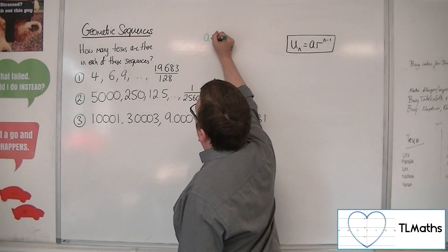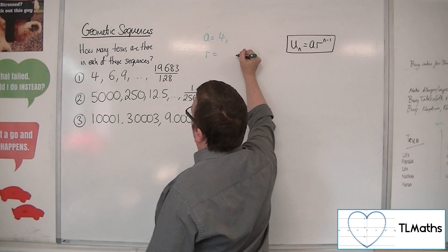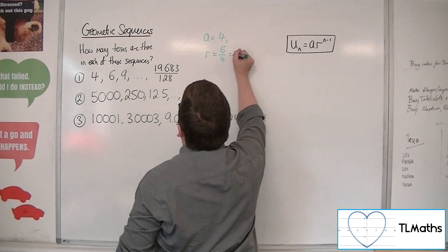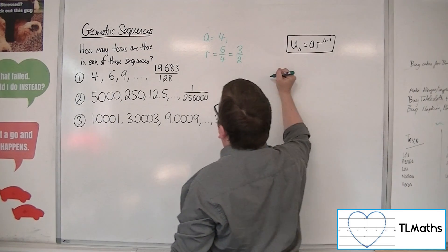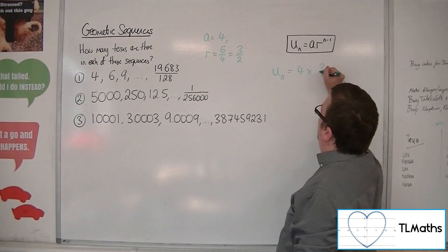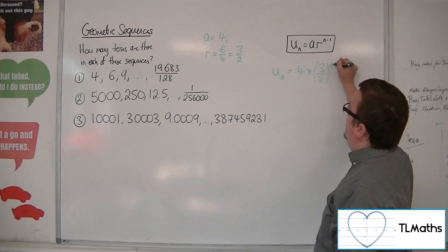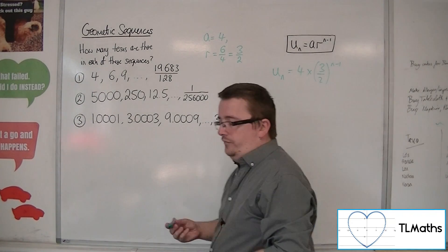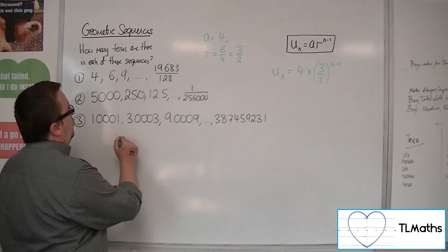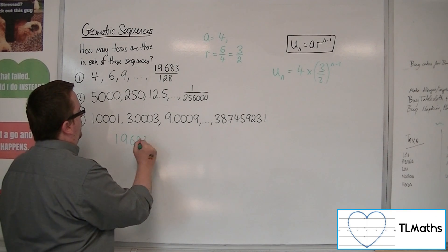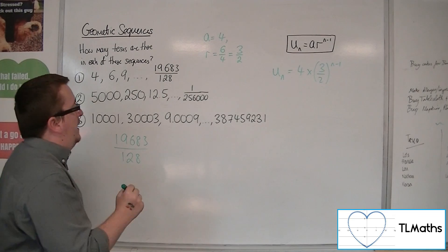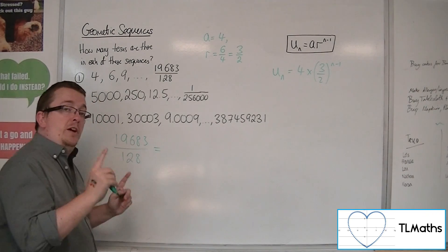a is clearly 4. The common ratio, we can do 6 divided by 4, so 3 halves. So the nth term of this sequence is a times r to the n minus 1. Now the last term that we're looking at in this sequence is 19683 over 128.